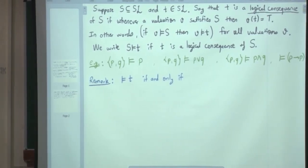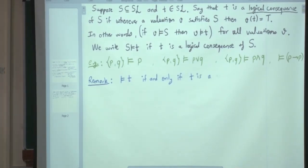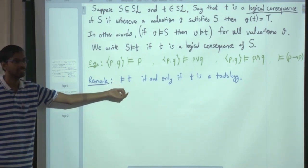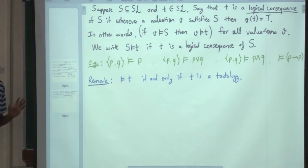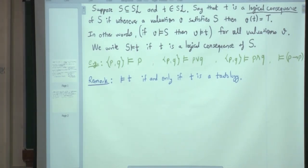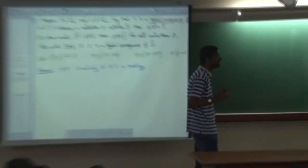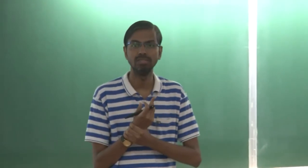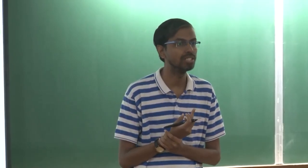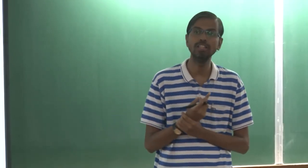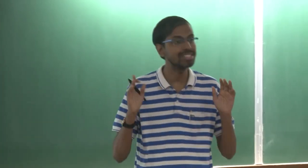When nothing implies T, T must be a tautology. You can always use the double turnstile symbol with the empty set on the left-hand side. There is also a philosophical point: if you have some information and then get more, whatever you could conclude from the original should still remain valid.